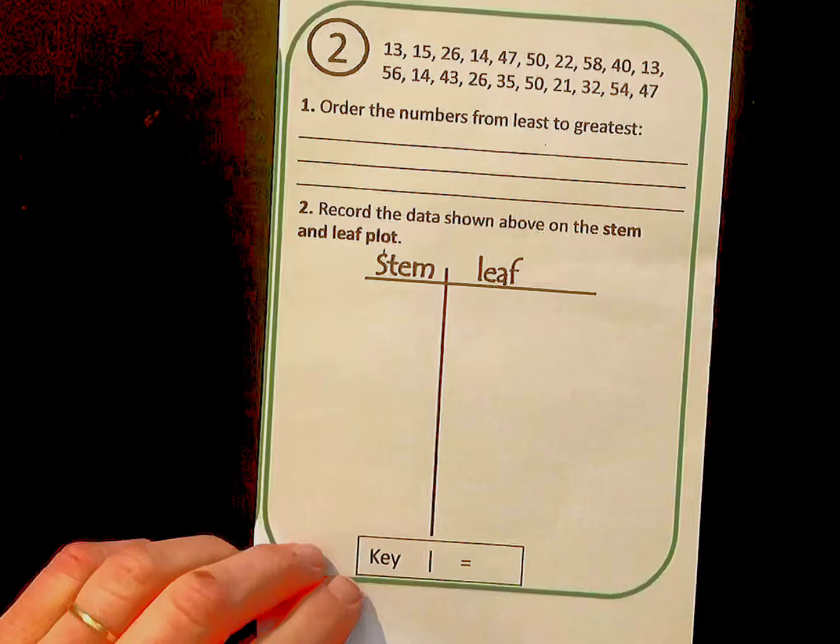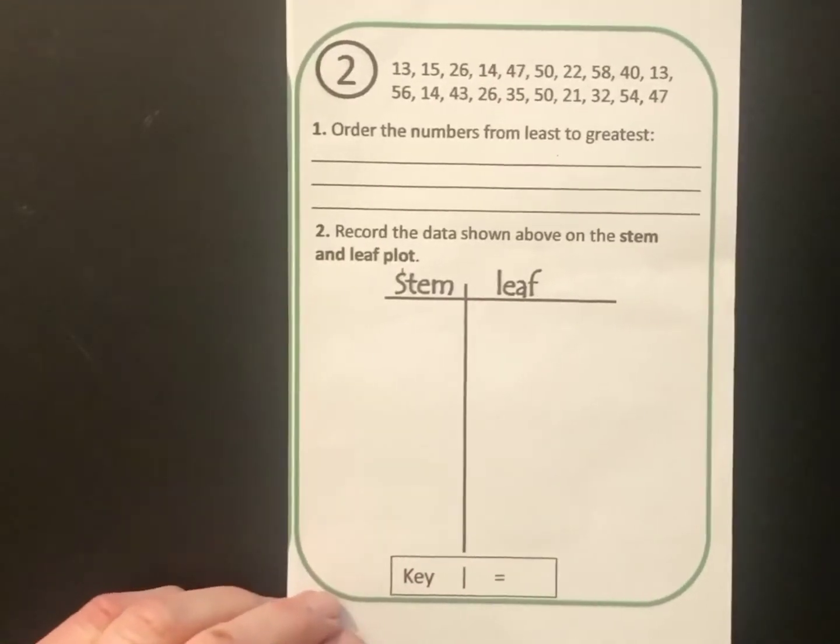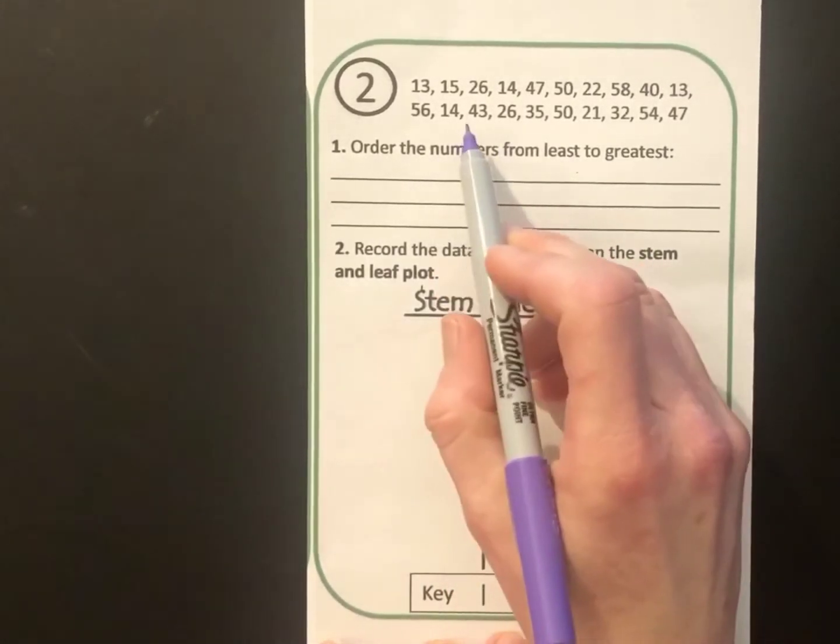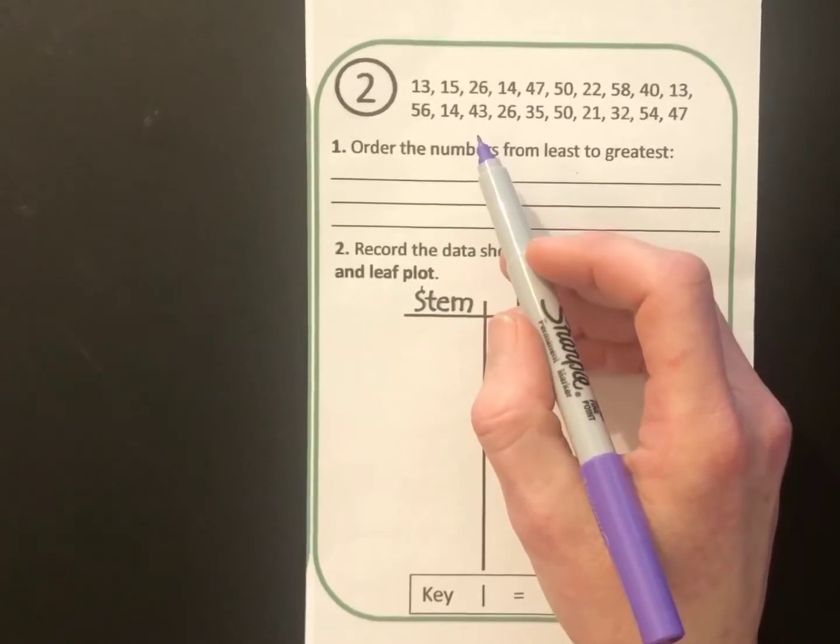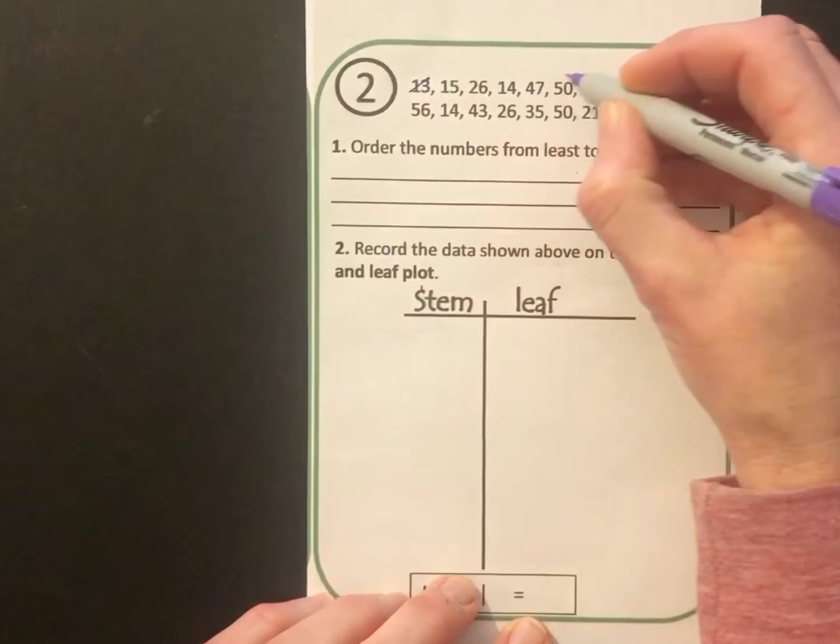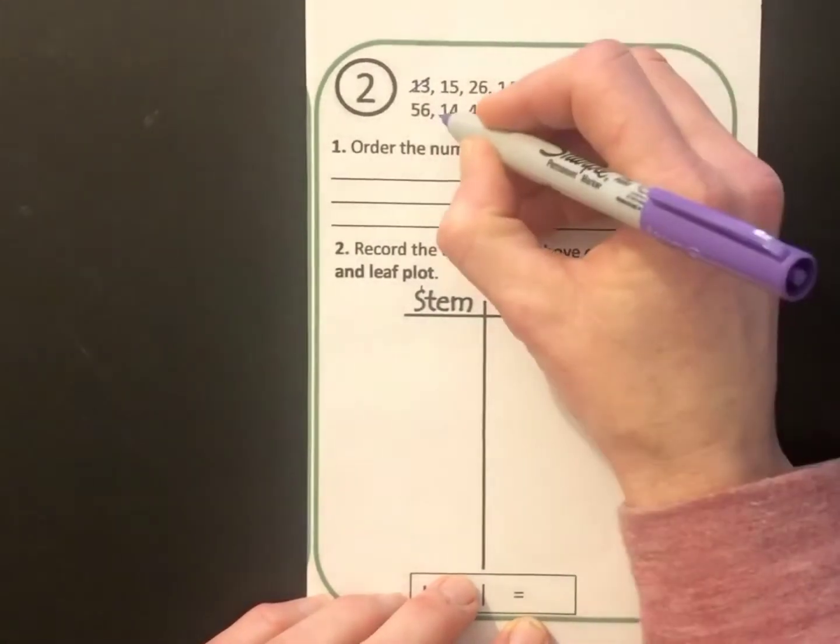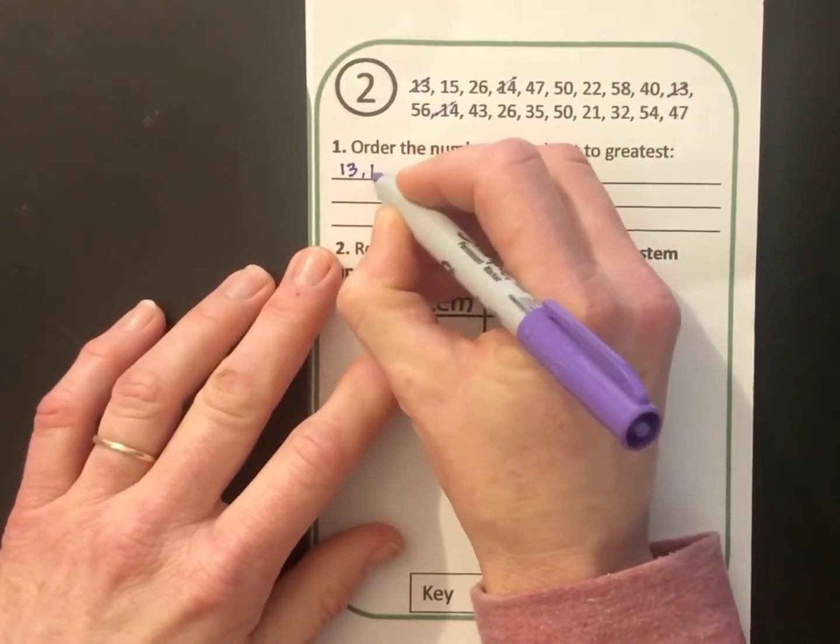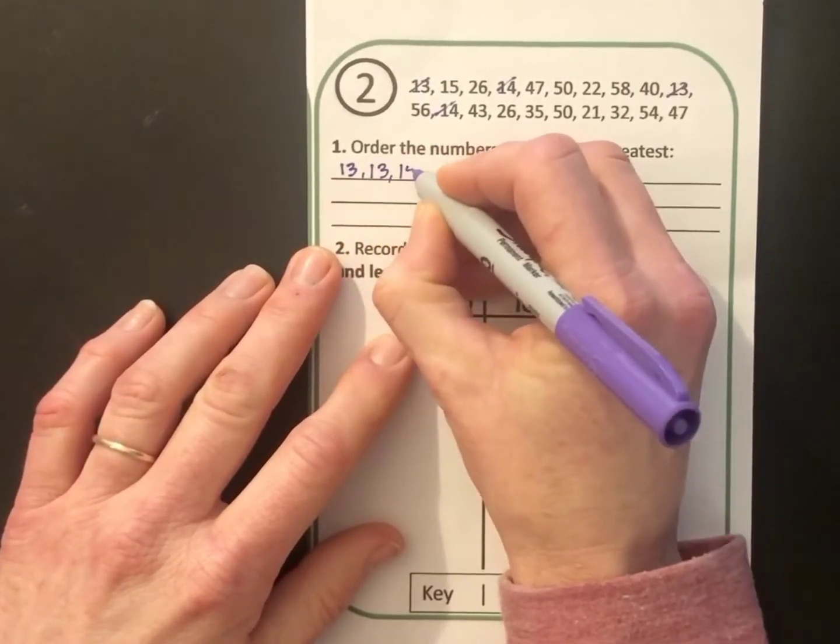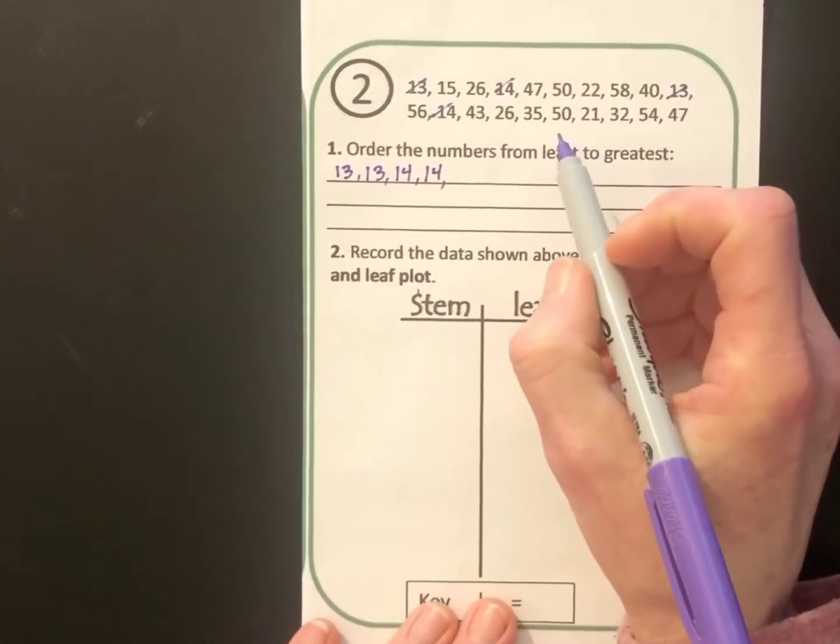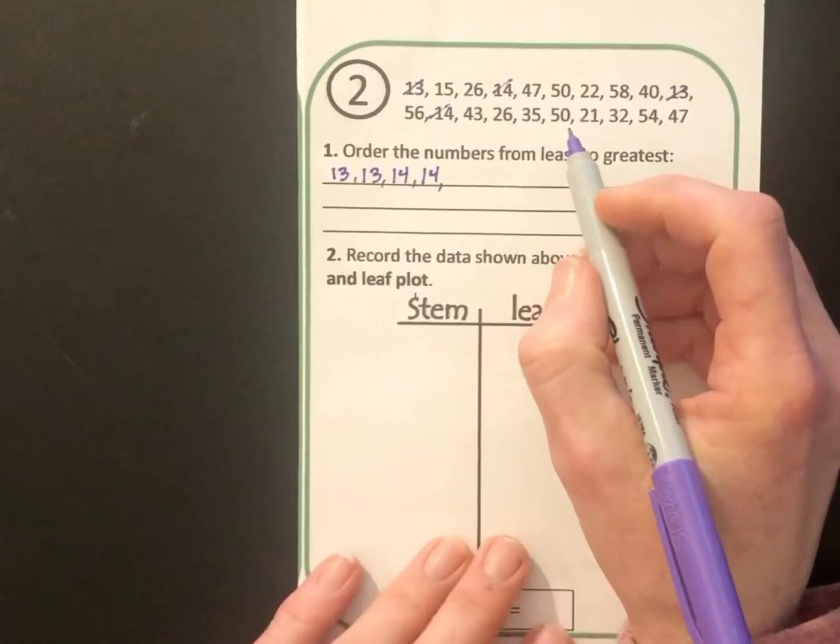Now for number 2. It says to order the numbers from least to greatest. So I'm going to go through and start in order and cross them out as I go. I see the smallest number is 13, and I have two, and I've got two 14s. So I'm going to go ahead and write 13, 13, 14, 14. And then I'll just continue on like this, crossing them out as I go. And at the end, I'll check over it and make sure I didn't miss any numbers.